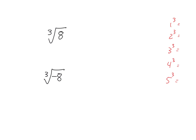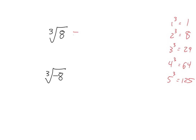Cube root — I've written down all my cubes: 1 times 1 times 1 is 1, 2 times 2 times 2 is 8, 3 cubed is 27, then 64, 125. Those are the most common cubes. The cube root of 8 is just 2, not negative 2. If I did negative 2 times negative 2 times negative 2, I've got an odd number of negatives and the answer would be negative 8. So I can take the cube root of a negative number, but I cannot take the square root of a negative number. If my root is an odd number, I can take a root of a positive or negative. If my root is an even number — square root, fourth root, sixth root — I cannot take those even roots of negative numbers.